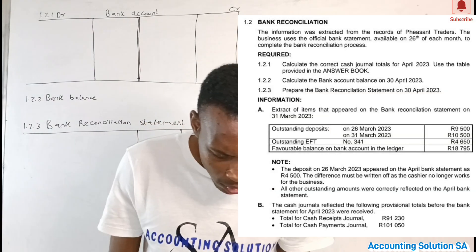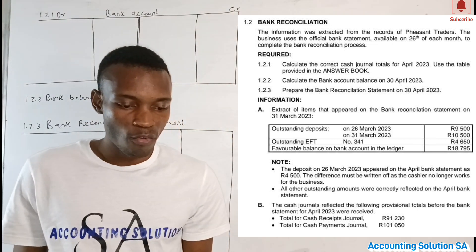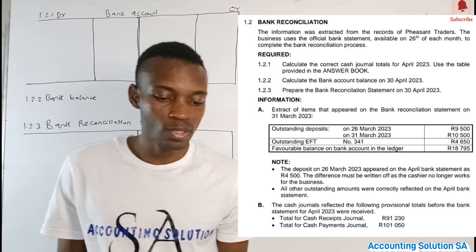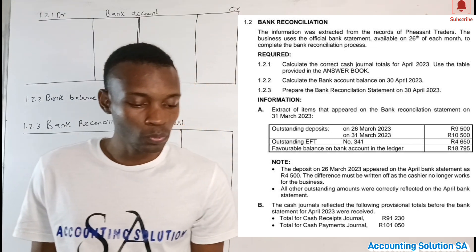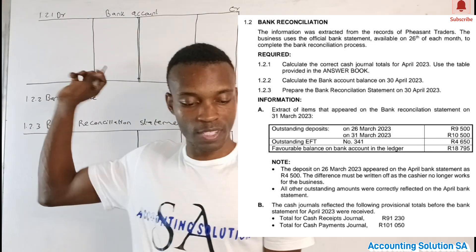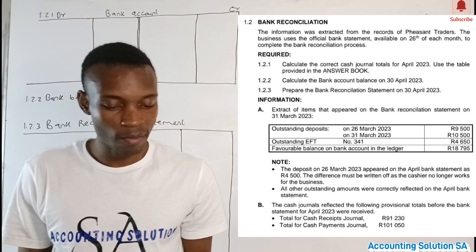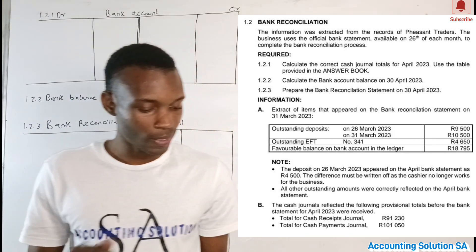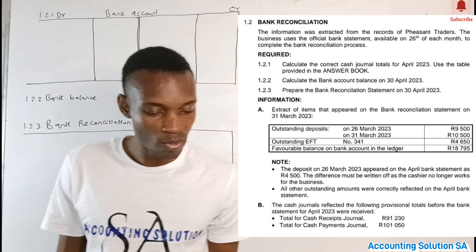Let's check on our question paper. The information was extracted from the records of a peasant trader. The business used the official bank statement available on the 26th of each month to complete the bank reconciliation process. Question 1.2.1: complete the correct general total for April 2023 using the table provided. Then complete the bank account balance on 30 April 2023, and prepare the bank reconciliation statement on 30 April 2023.